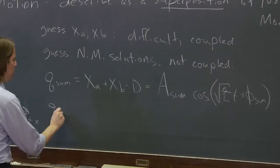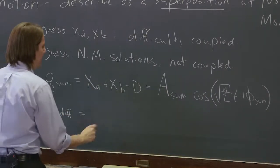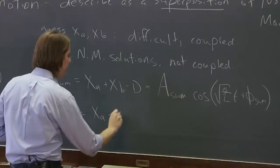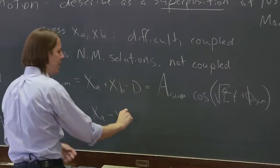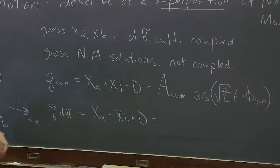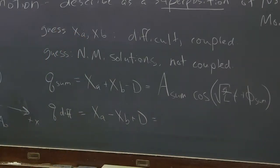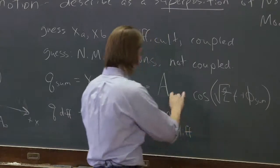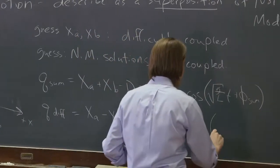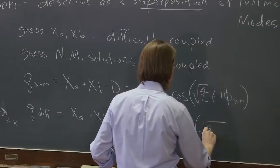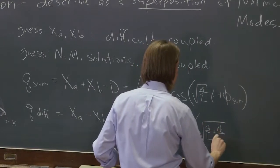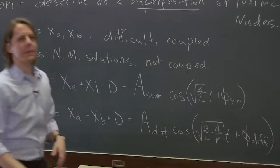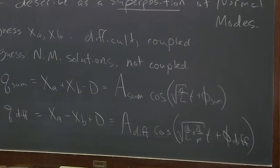The other normal mode was the difference mode, Q diff. Remember, it was equal to, if you looked at the equation of motion that we got, it was xA minus xB. And since the D is usually in parentheses, it ends up being plus D. That was the minus mode. And it can also, we can guess, it followed the standard equation of motion. So we can guess a sinusoidal motion, A diff, give it an arbitrary amplitude, cosine, and its frequency was g over L plus 2k over m. Plus, it could have an arbitrary phase.